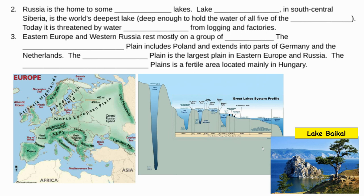Russia is home to some 200,000 lakes. Lake Baikal, which is in the south-central part of Siberia, is the world's deepest lake. If you look at the diagram below, you have our Great Lakes on one side and Lake Baikal on the other. It is super deep — basically deep enough to hold the water of all five of the Great Lakes.